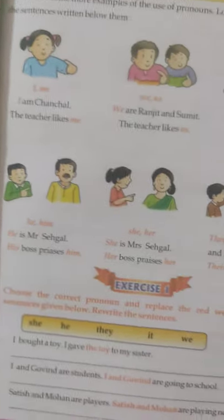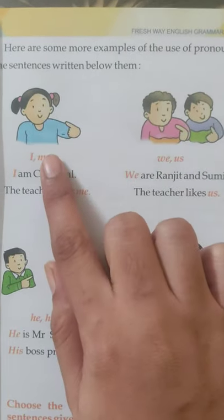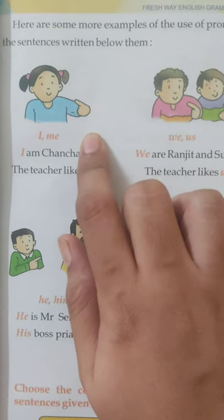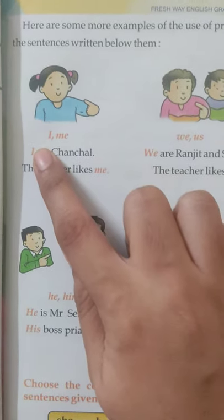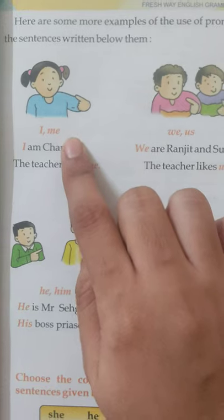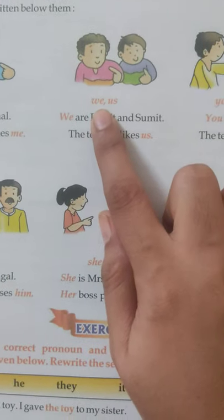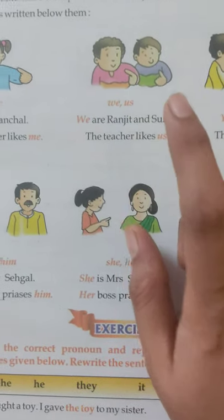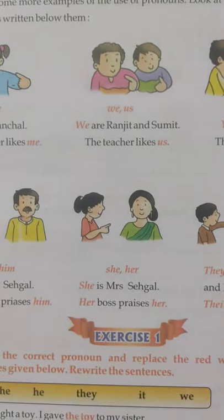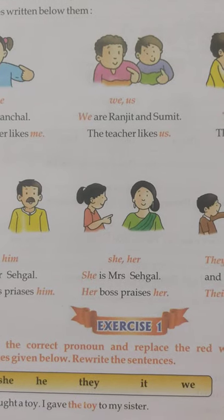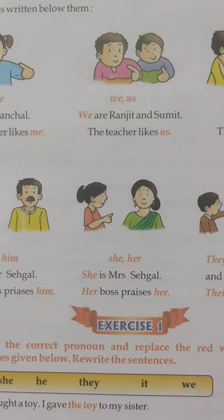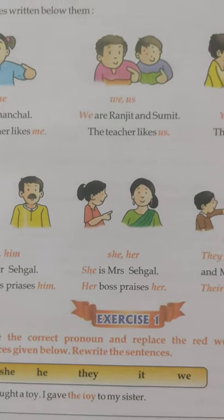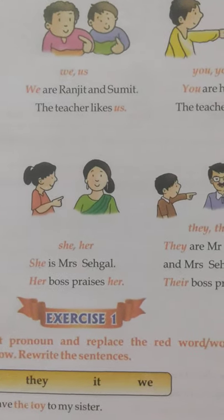Let's see how we use these words. We use the word 'I' or 'me' for the speaker — whosoever is speaking. 'We' is the plural of 'I'. If I and my friend — we two — are there, it is 'we'. The correct word for 'I and my friend' is 'we'. And similarly, for 'we', we use 'us'.